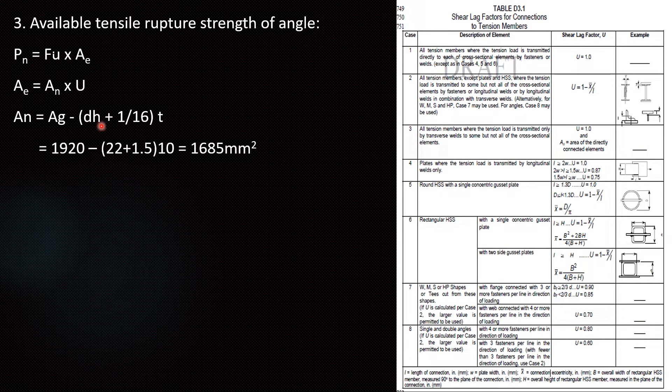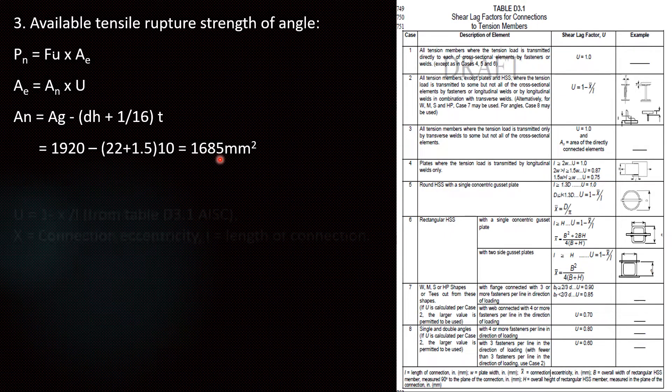dh is the hole diameter of the bolt. Substituting the values we know Ag, dh is in American units. I converted into SI units, 22 plus 1.5, t is thickness of the angle 10. So we are getting the value of 1685 mm² as An value.